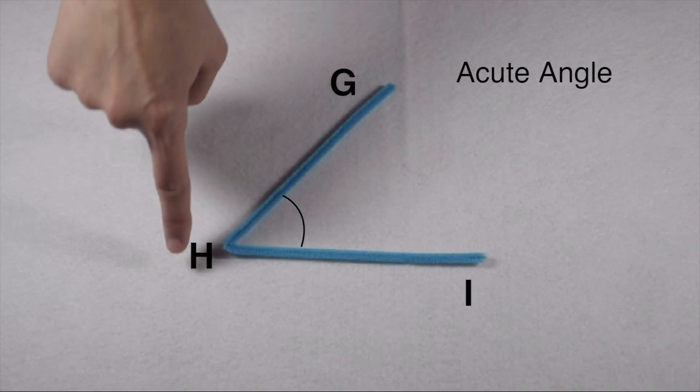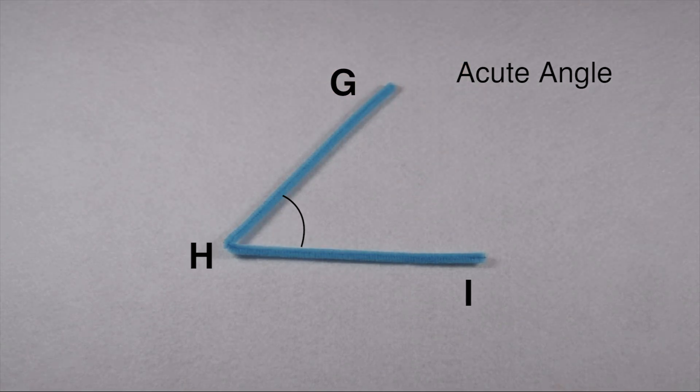When we look at angle G, H, I, we can see that it's less than 90 degrees. This means angle G, H, I is an acute angle because acute angles measure less than 90.